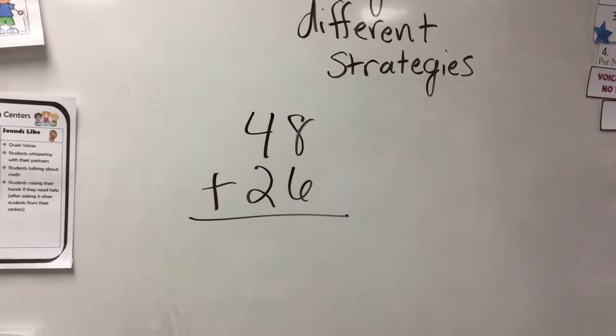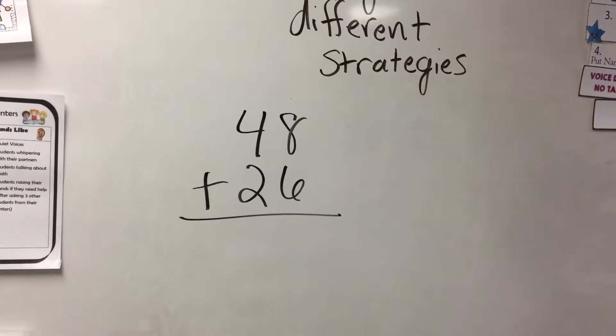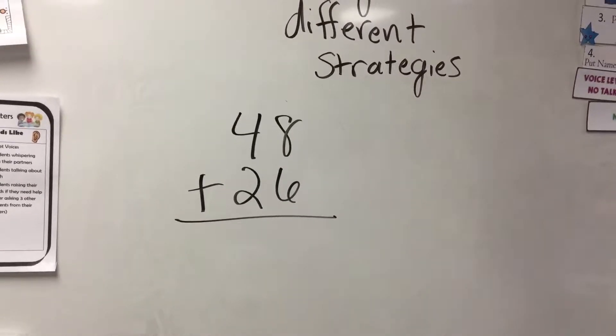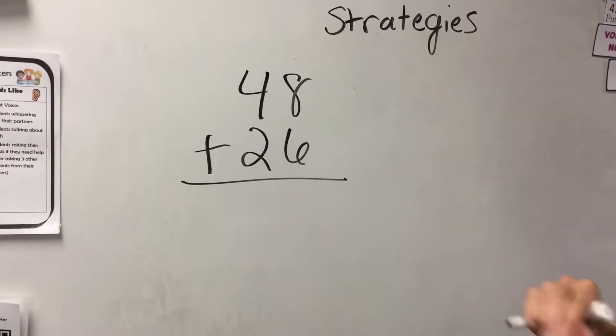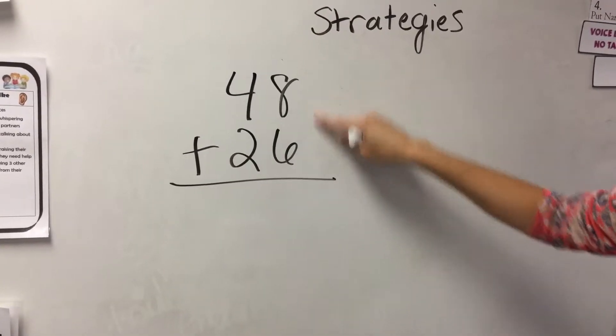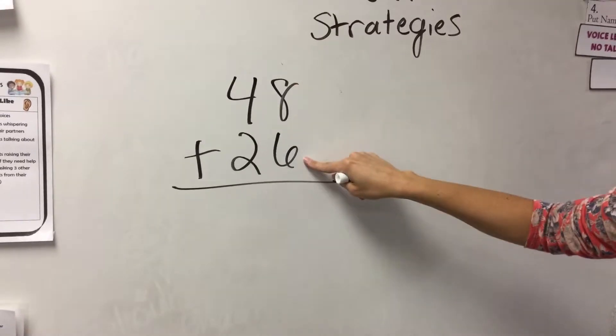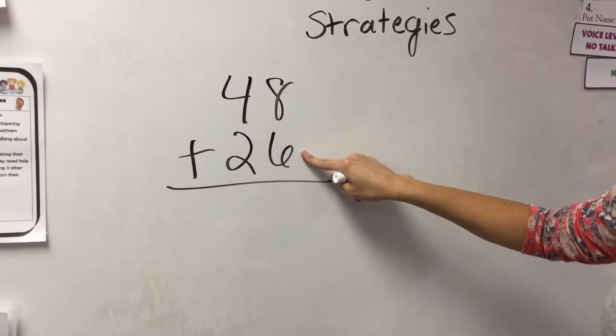Alright, so the problem that we're going to work with today is 48 plus 26. It's a two-digit plus a two-digit addition problem. The one way that I would maybe attack this problem would be, I would look at my ones place and see that there's eight plus six, because I'm going to add my ones together first.